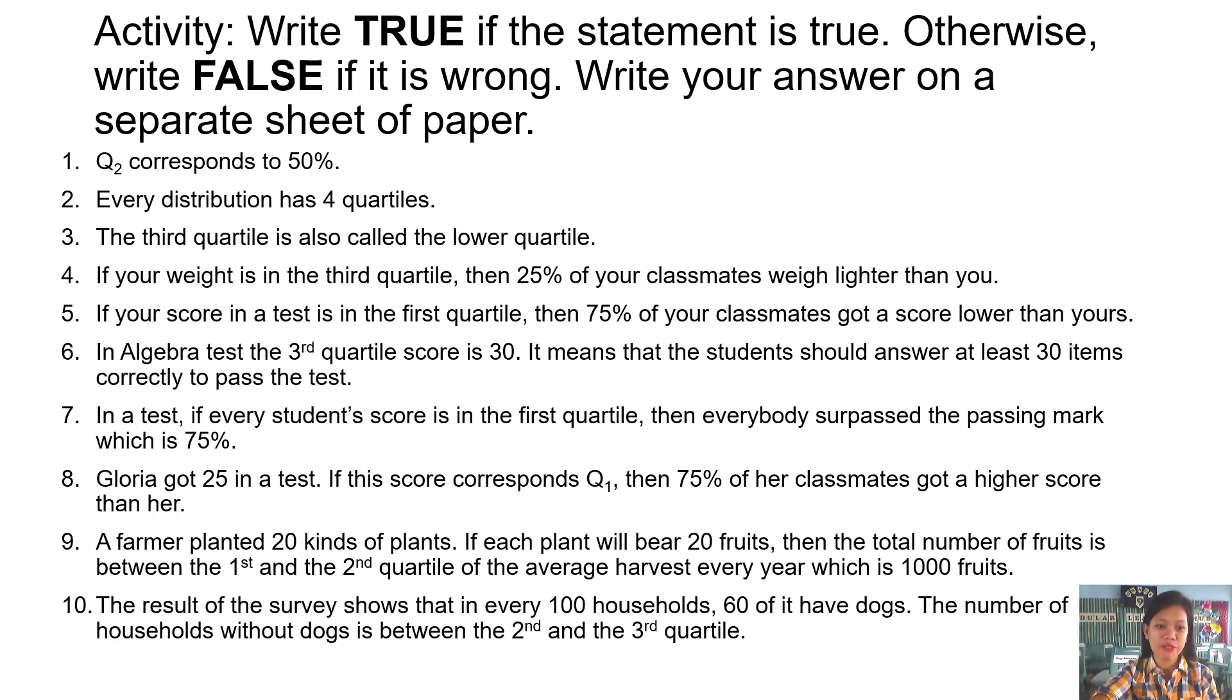Number eight: Gloria got 25 in a test. If this score corresponds to quartile one or first quartile, then 75% of her classmates got a higher score than her. Is it true or false? Number nine: A farmer planted 20 kinds of plants. If each plant will bear 20 fruits, then the total number of fruits is between the first and the second quartile of the average harvest every year, which is 1,000 fruits. Is it true or false? And number 10: The result of the survey shows that in every 100 households, 60 of it have dogs. The number of households without dogs is between the second and the third quartile. Is it true or false?